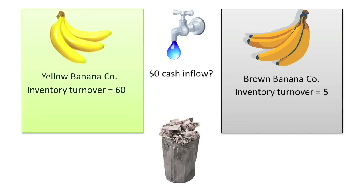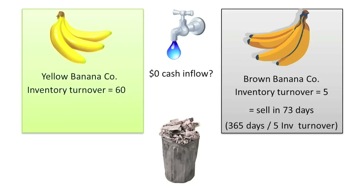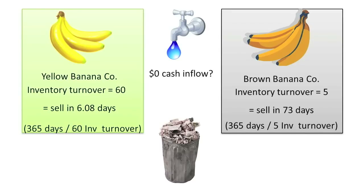As with the AR Turnover Ratio, a company's days sales of inventory is computed by dividing 365 by the number of times the company turns its inventory over each year. Brown Bananaco has 73 days' sales of inventory on hand — 365 days per year divided by an inventory turnover ratio of 5. Per these computations, Brown Bananaco needs 73 days to sell its bananas whereas Yellow Bananaco only needs 6 days to sell its bananas.